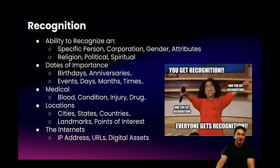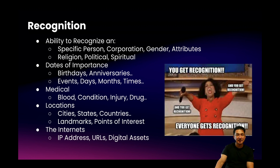Some other things include birthdays, anniversaries, specific events, days, months, and times. As an example, someone who is celebrating Nooruz — you might be able to safely say that the individual is Persian of Iranian descent. Things like blood type, medical conditions, or medications they are taking could be used to identify an individual. Things like cities and states can be used to narrow down an individual's identity, or even landmarks. If I say that I see the Queen Mary every day, you could probably conclude that I live in Long Beach, California. Then there are digital-related items like IP addresses and URLs which could be used to exactly pinpoint an individual's identity.